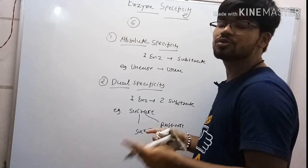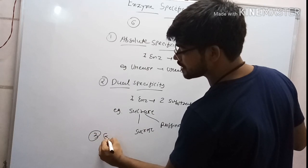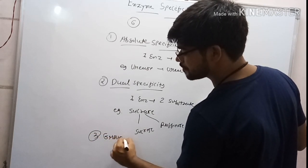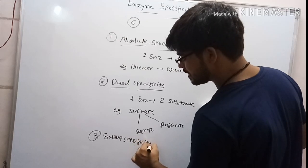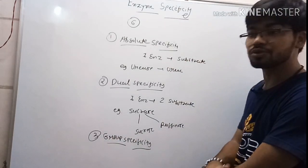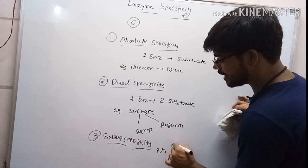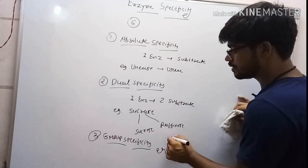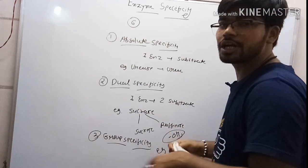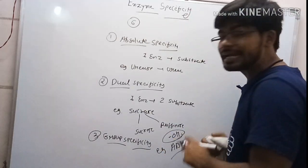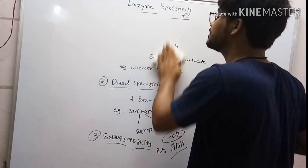The third is group specificity. As the name suggests, it is based on groups. The best example is alcohol dehydrogenase enzyme, which works on OH groups. So mostly alcohols and alcohol-related compounds are catalyzed by ADH, alcohol dehydrogenase enzyme.